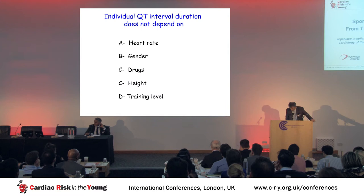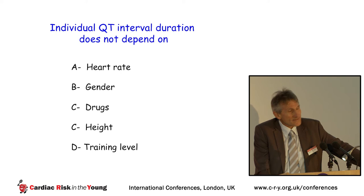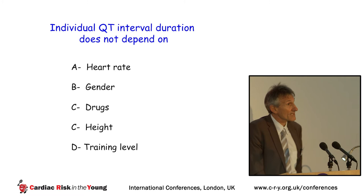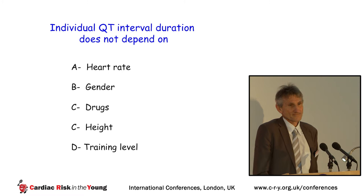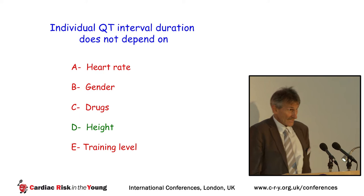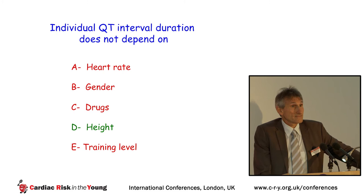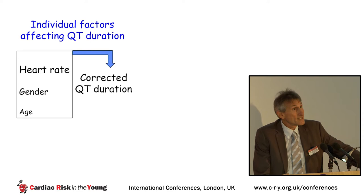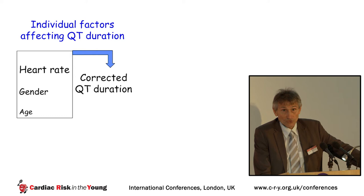The parameters that affect individual QT interval duration include heart rate, gender, drugs, age, and training level — all except height. Heart rate increases QT duration, which is why we must correct absolute QT durations for heart rate. We know that in females QT duration is longer than in males.